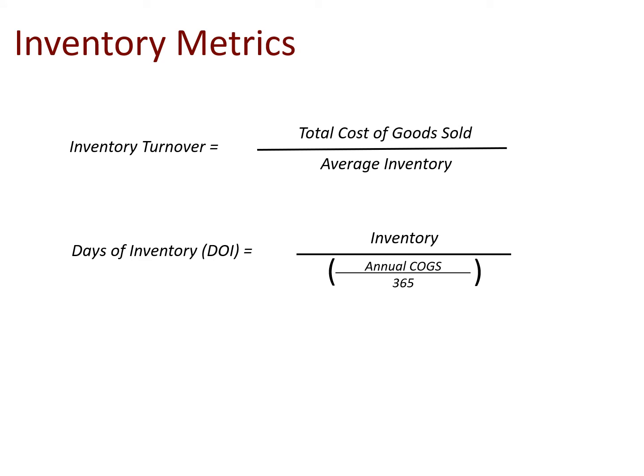Another inventory metric is days of inventory, or DOI, similar to DSO: take your inventory figure and divide it by annual cost of goods sold divided by 365, giving you average daily cost of goods sold. Dividing that into inventory tells you on average how long an item sits in your warehouse from receipt to sale. As with DSO, you can use average inventory for an average DOI or current inventory for a current DOI.